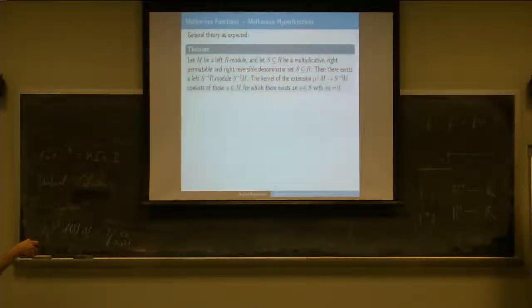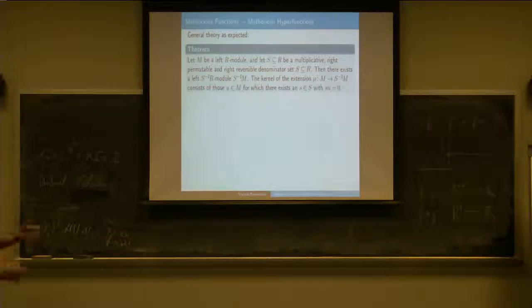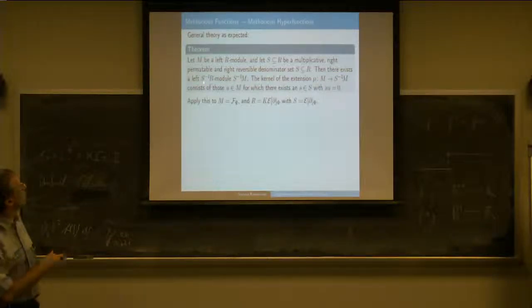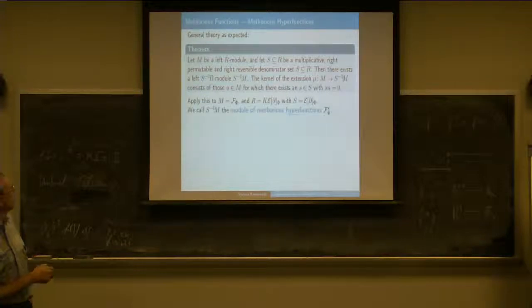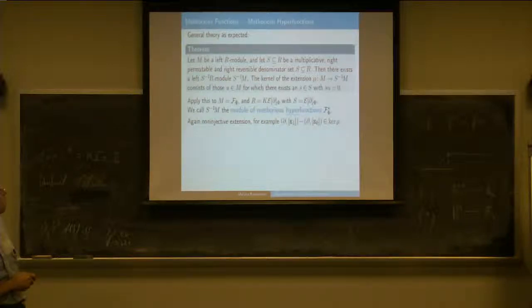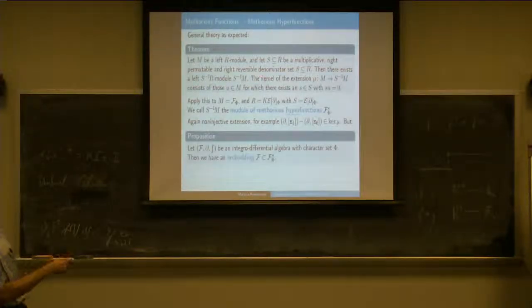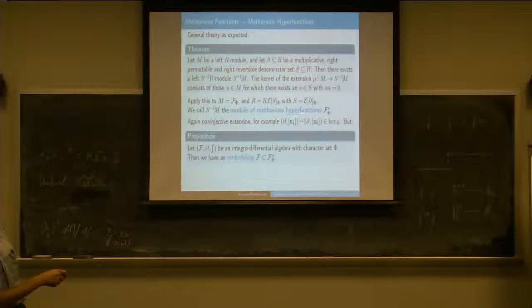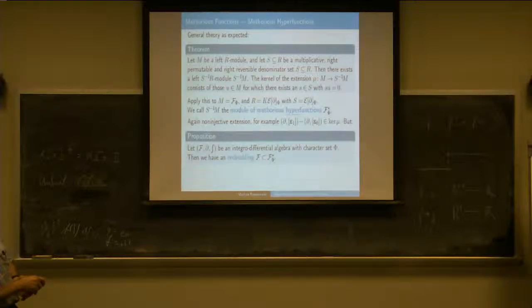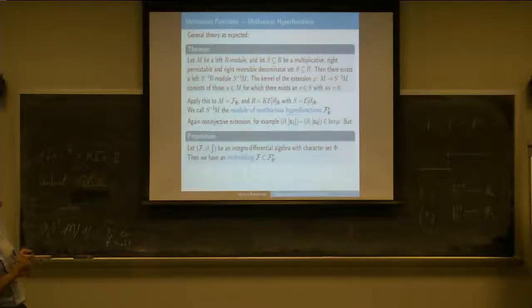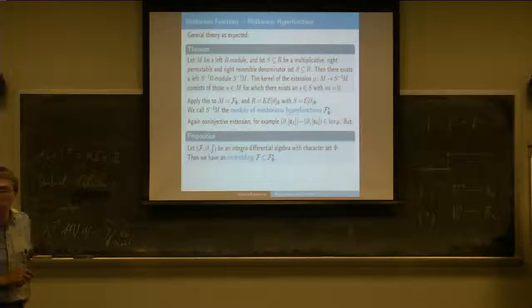Now you can go to the hyperfunctions, because as I said there's a general theory that you can always construct a localized module if you have localized the scalars—and that is what I call the Methorius hyperfunctions. Unfortunately, some elements are lost again—the extension is non-injective. But the beautiful thing, which might have gone wrong, is that our original function space F is isomorphically contained in the new Methorius hyperfunction module. So at least we have the original functions.